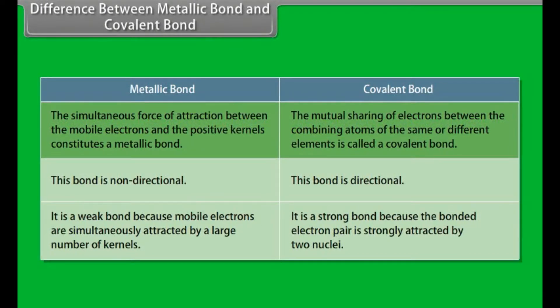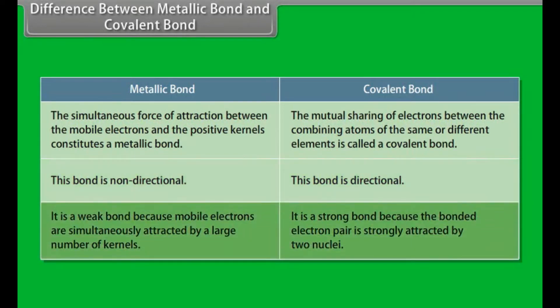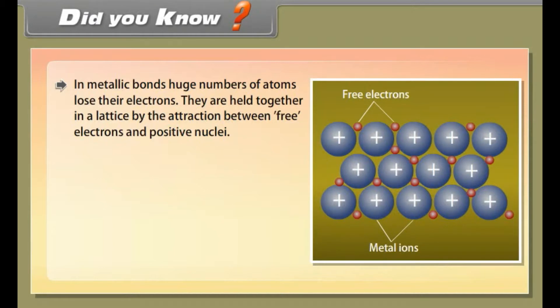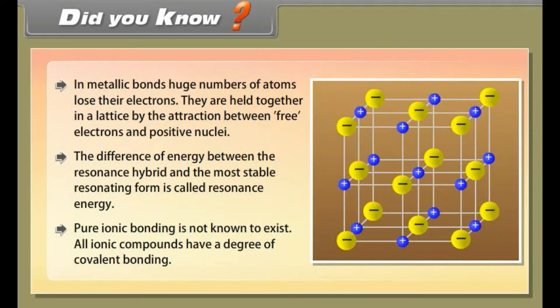Difference between metallic bond and covalent bond. The simultaneous force of attraction between the mobile electrons and the positive kernels constitutes a metallic bond, whereas the mutual sharing of electrons between combining atoms is called a covalent bond. Metallic bond is non-directional, whereas covalent bond is directional. Metallic bond is weak because mobile electrons are simultaneously attracted by a large number of kernels, whereas covalent bond is strong because the bonded electron pair is strongly attracted by two nuclei. Did you know? In metallic bonds, a huge number of atoms lose their electrons and are held together in a lattice by attraction between free electrons and positive nuclei. The difference of energy between the resonance hybrid and the most stable resonating form is called resonance energy. Pure ionic bonding is not known to exist — all ionic compounds have a degree of covalent bonding.